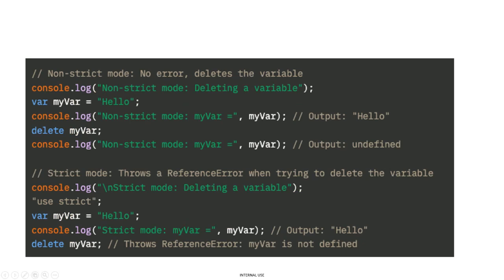Another example: you declare myVar using the var keyword, then call delete myVar. Without strict mode, you can delete the variable — after deletion, printing it gives undefined, but before deletion you still get 'hello.' In strict mode, trying to delete a variable throws a reference error saying myVar is not defined. The delete operator is simply not allowed in strict mode.